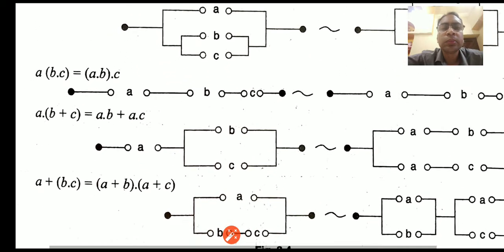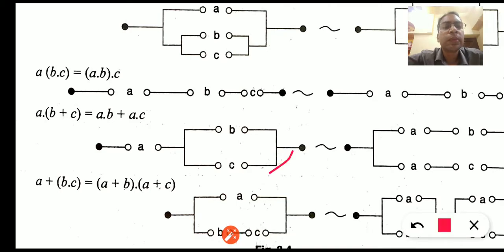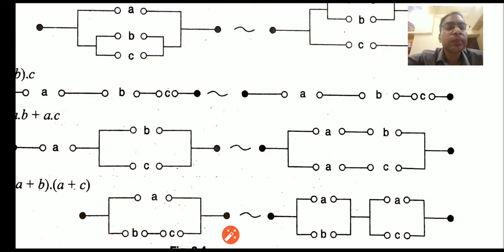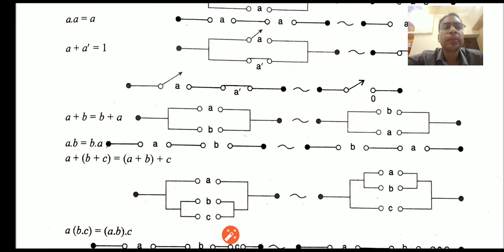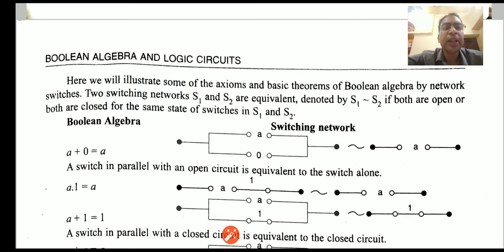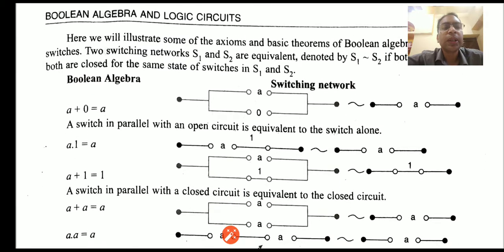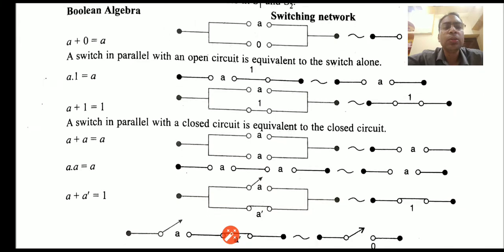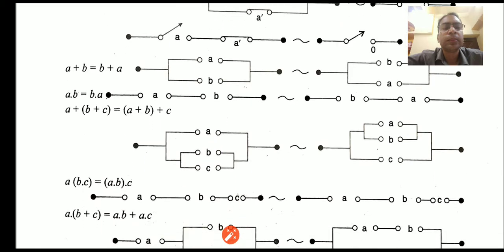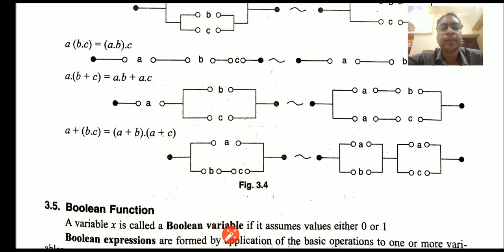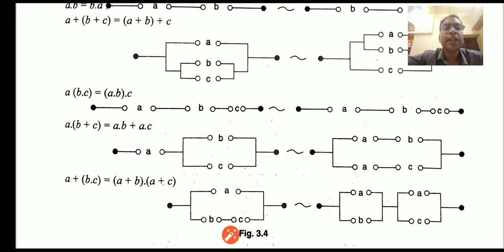Now this is the distributive circuit. There are two distributive circuits — one indicating the LHS and one indicating the RHS. These are all the circuits. You can replay, pause, make the circuits in your copy, and if any problem arises, please feel free to comment and ask. That is it for today's lecture; the rest we will study in the next lecture. Thank you so much.